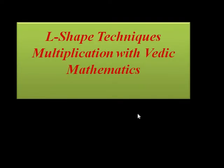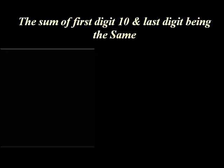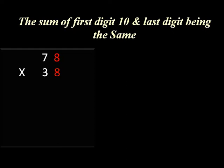Today we will again discuss one technique — the L-shaped multiplication technique with Vedic mathematics. We will see this today. The condition is: the sum of the first digits is 10, and the last digits of both numbers are the same. We will take one example.